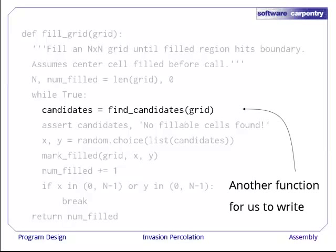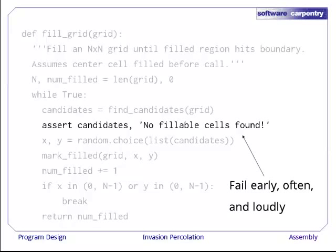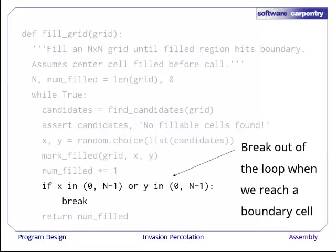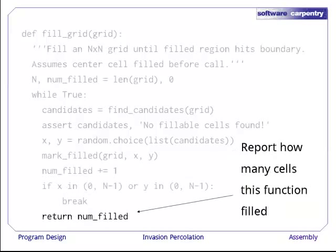Inside the loop, we call another function, find_candidates, to find the set of candidates for filling. This function hasn't been written yet, so we add it to our to-do list. We then check that the set of candidates is non-empty, because if we don't find any candidates for filling, something has probably gone wrong with our program. And then, as discussed in a previous episode, we convert the set of candidates to a list, make a random choice to find the x-y coordinates of the cell we're going to fill. Then we mark that cell as filled, and increment our count of the number of cells that we've filled so far. We then check to see whether either the x-coordinate or the y-coordinate is on the boundaries of the grid. If it is, we break out of our loop and return the number of cells that we've filled.